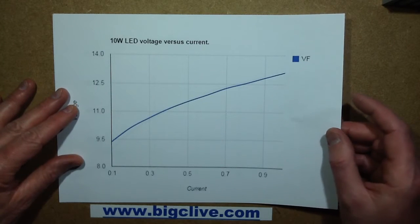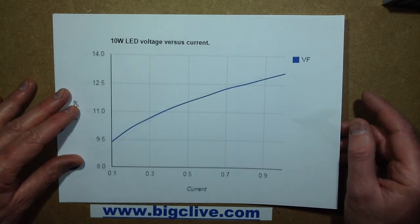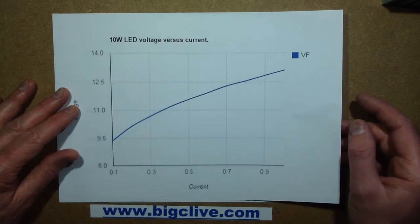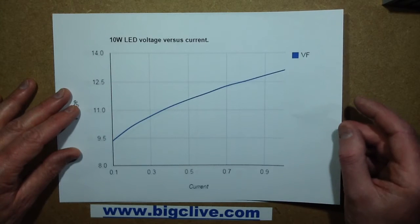Which was equivalent to about 13.11W dissipation. Most of these LEDs tend to be run at around about the 900mA mark, and at that it was 12.83V, which was still 11.55W.